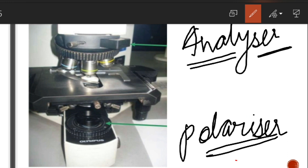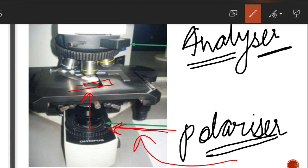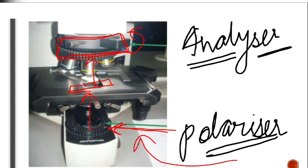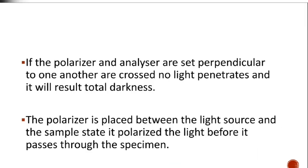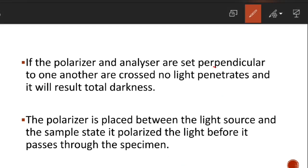Looking at the polarizing microscope diagram: there is an arrow showing the polarizer which passes light in only one direction, then the objective lens with our lenses, and then the analyzer which analyzes the light beam. Finally, we see the magnified image.